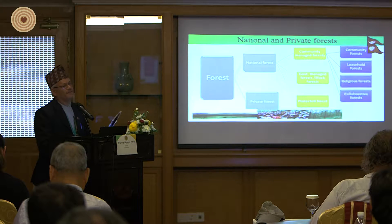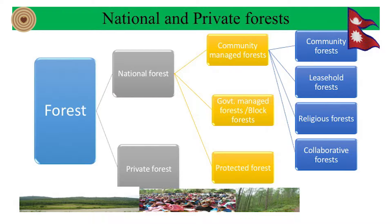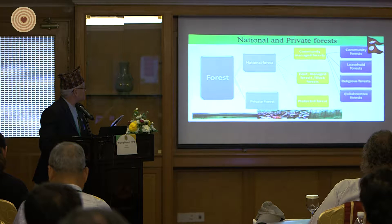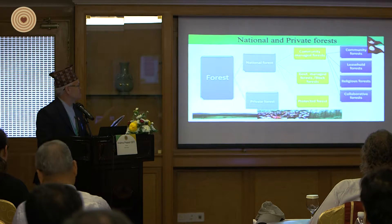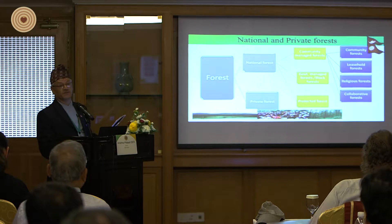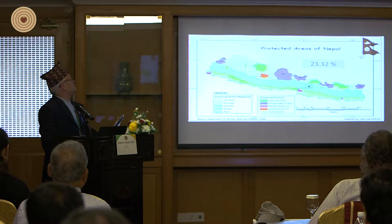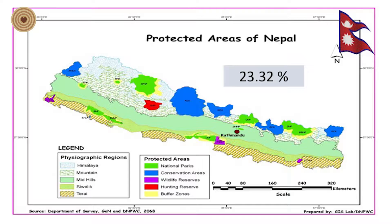The main forest types are legally divided into two categories in our country: private forest and national forest. National forest is divided into different sectors from a management perspective — community-managed forest, government-managed forest, and protected forest. Community-based management includes community forest, leasehold forest, religious forest, and collaborative forest. Protected areas are not focused on utilization — they cover conservation areas, wildlife protection, and biodiversity.